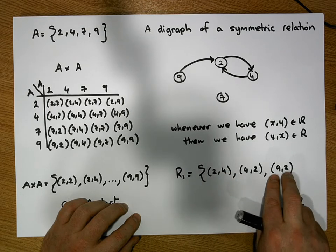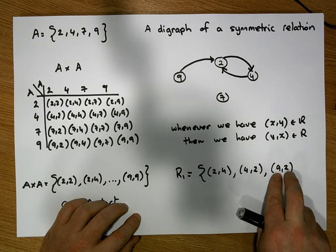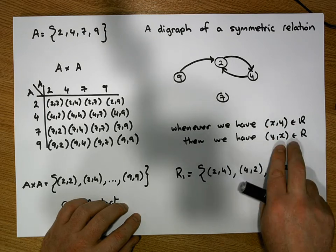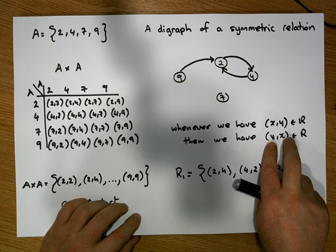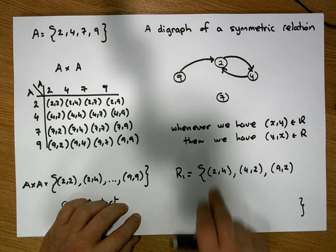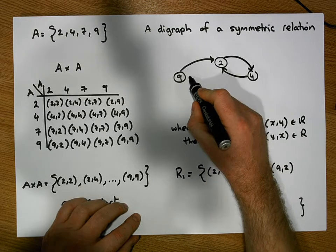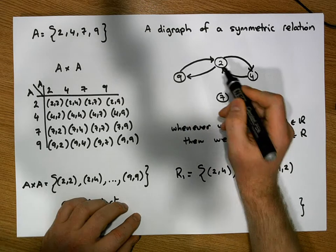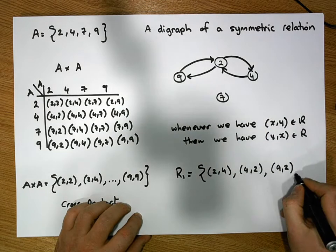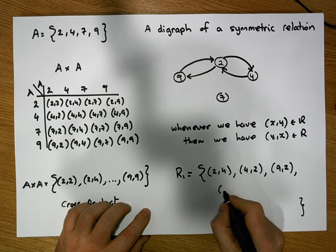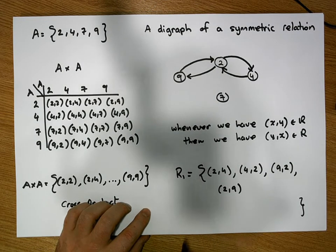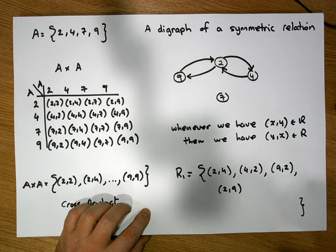But it contains (9,2), and the question is, so it contains (9,2), 9 being the x, 2 being the y. And the question is, does it contain (y,x) or (2,9)? No, it doesn't. To make it symmetric, we put a self loop back in from 2 to 9. So what we would do here is we'd add in the value (2,9). And you can continue in that particular fashion.